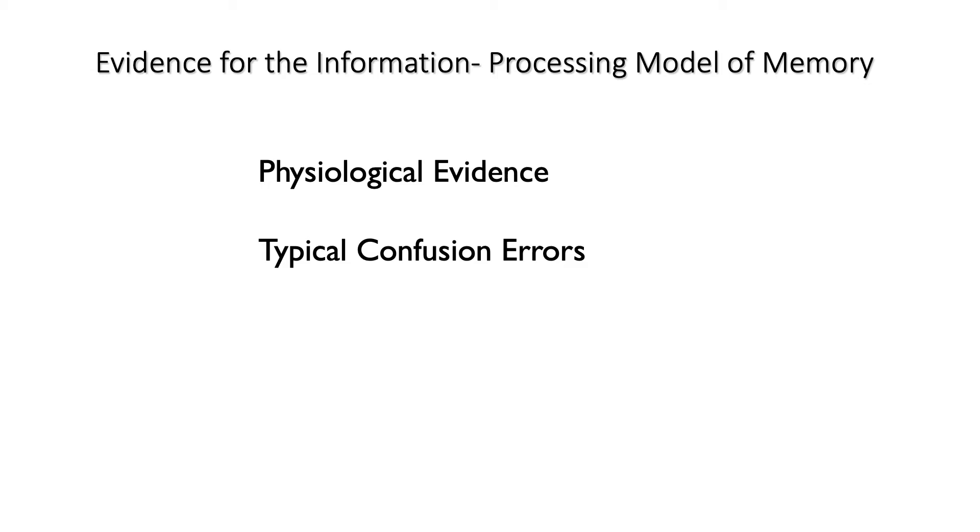There are also a lot of little laboratory curiosities that seem to fit nicely with the information processing model. There's something called the serial position effect, sometimes known as the serial order effect. If I give somebody a list of things to remember and then ask them to give that back to me, they remember the things at the beginning of the list and the things at the end of the list better than the things in the middle of the list.